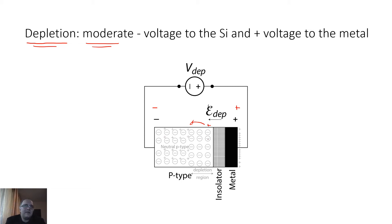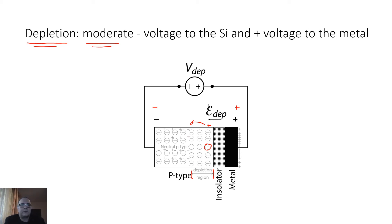The holes feel the force of the electric field and move away from the insulator, leaving behind negatively charged ions. The negative charge of the ions is now uncompensated because the holes moved away deep into the semiconductor. A region in space is created which is void of mobile charges — hence the name depletion region. The only charge in this region is the negatively charged ions, hence its alternative name: space charge region. This negative space charge exactly compensates the positive charge on the metal plate.